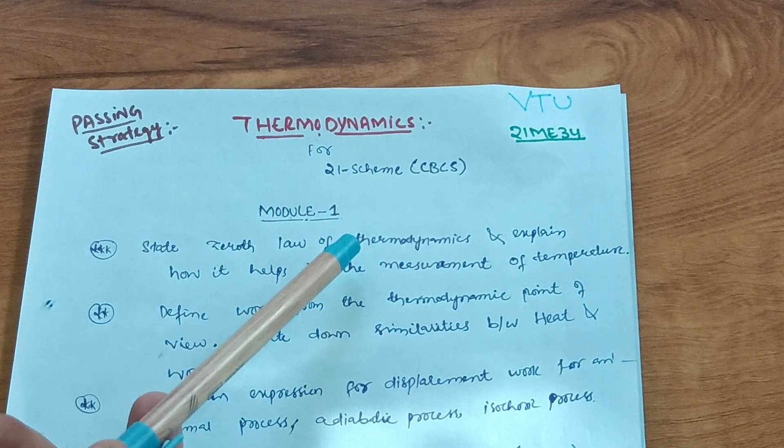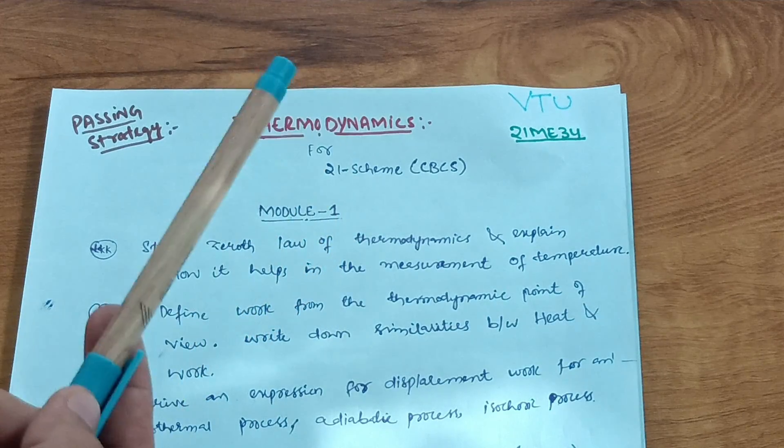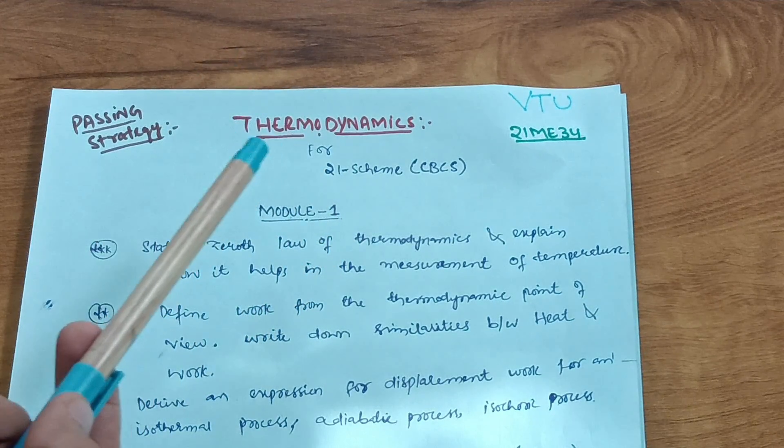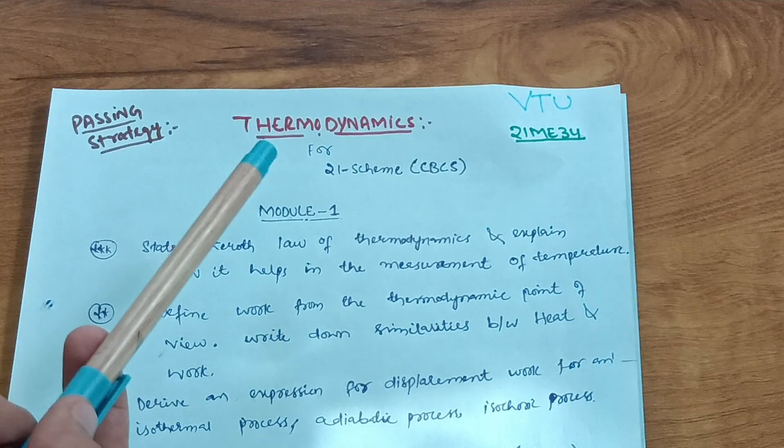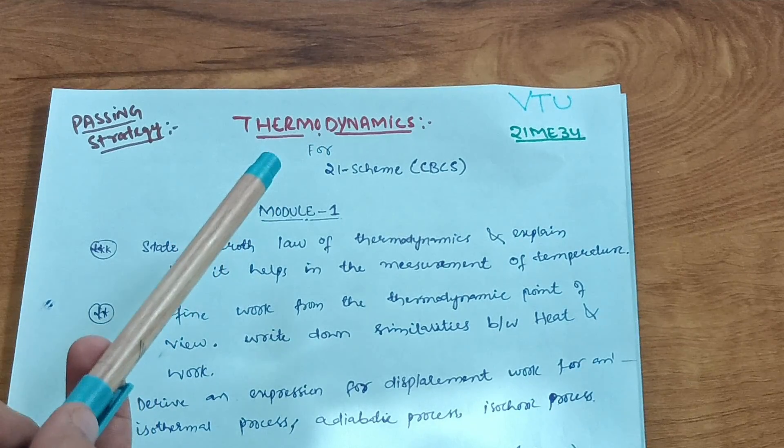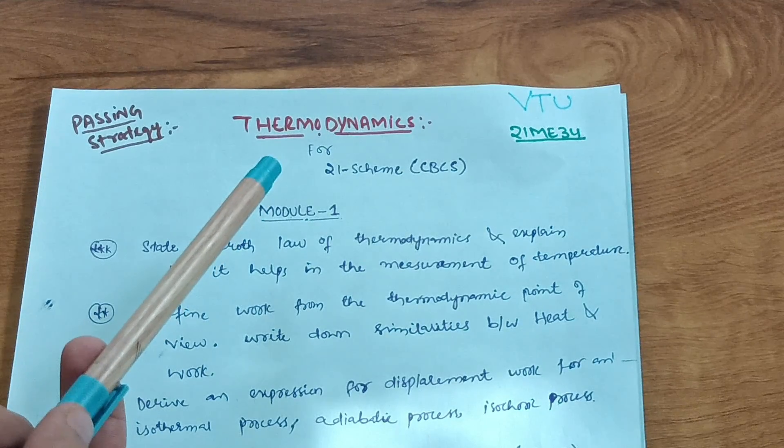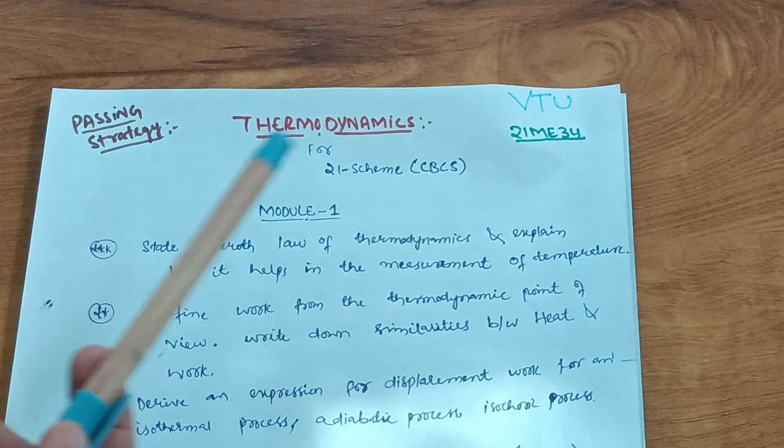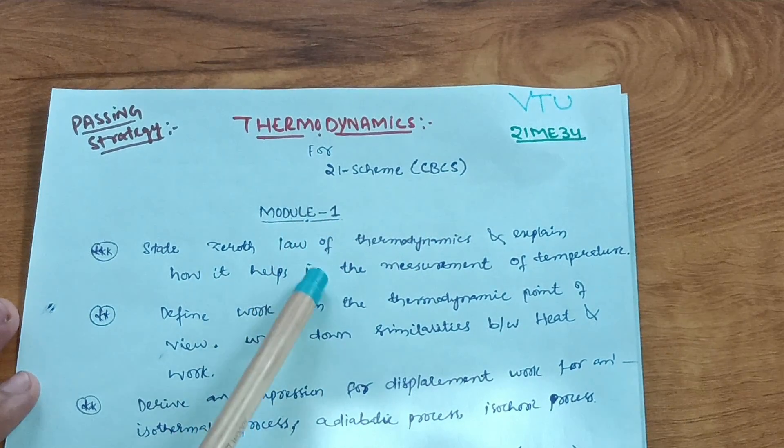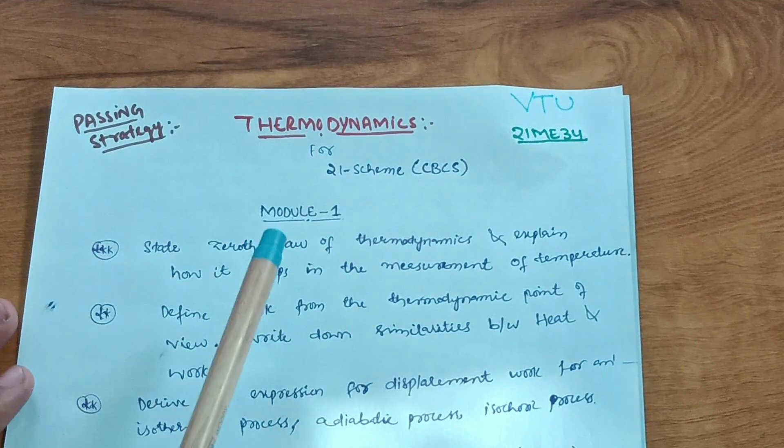As it is a problematic subject, I cannot say 50-50. Sometimes 50% is theory and 50% is numerical problems, but sometimes VTU is giving 70% numerical problems and 30% theory. It is VTU, you already know about it.